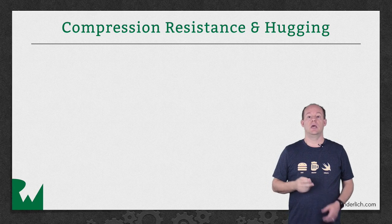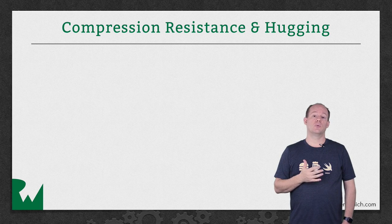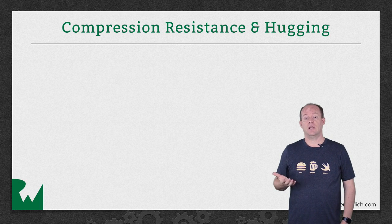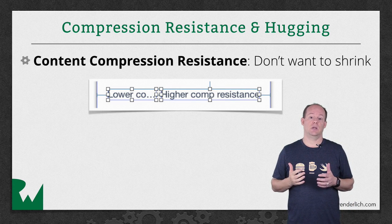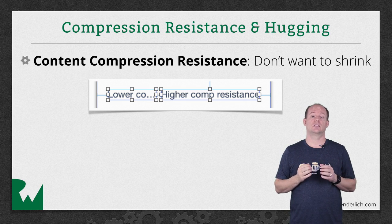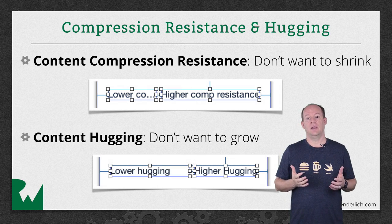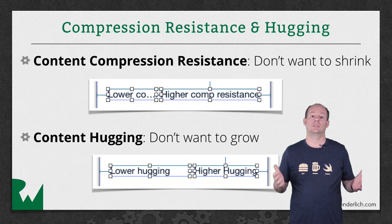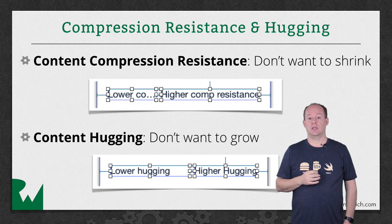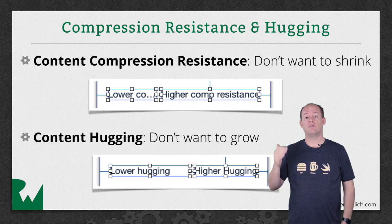The reason is that the constraint automatically created for the width of the label and the width of the button have the same priority for content compression resistance. When dealing with intrinsic content size, there are two sets of constraints that get automatically created for you, and you can control the priorities of those constraints. The first set is called content compression resistance — these deal with how much the view doesn't want to shrink smaller than its content. The second set is called content hugging — these deal with how much the view doesn't want to grow larger than its content. There are separate constraints and priorities for the horizontal and vertical directions if the view has an intrinsic width and height.